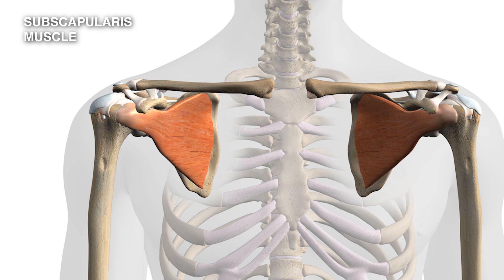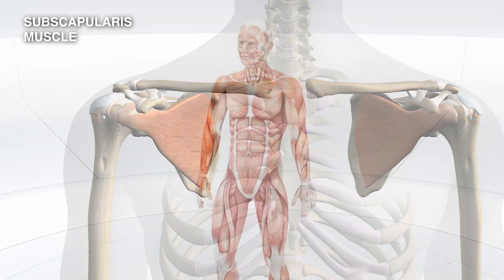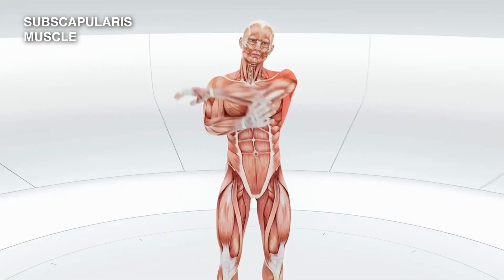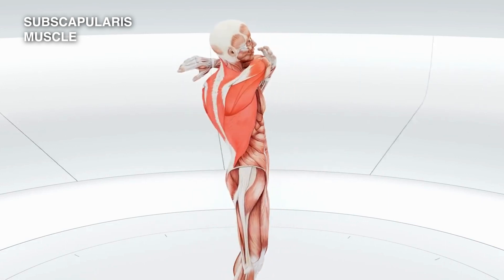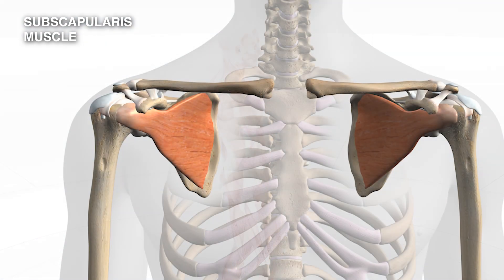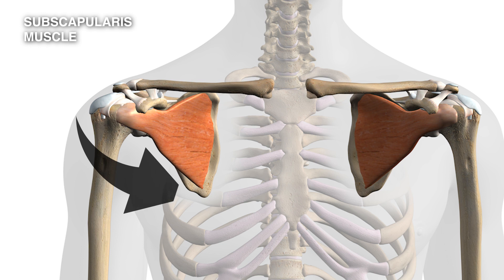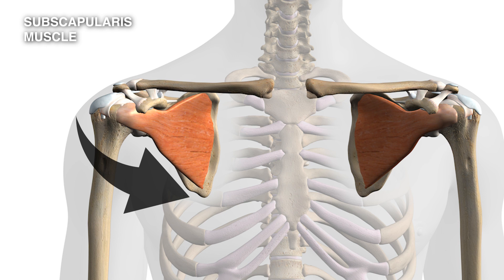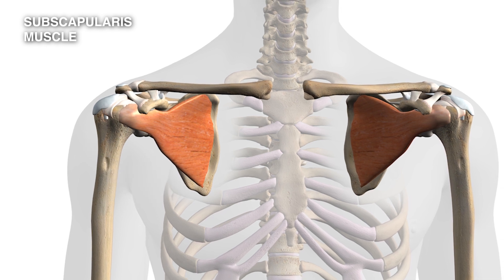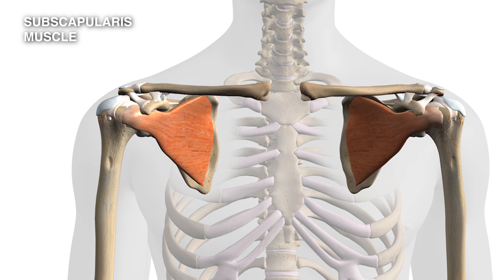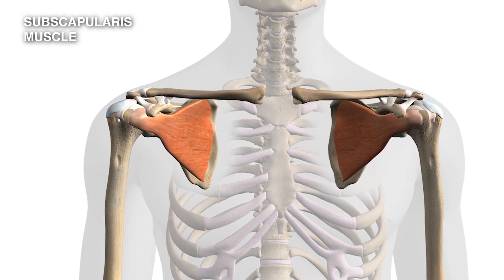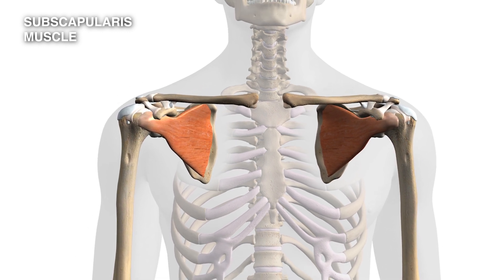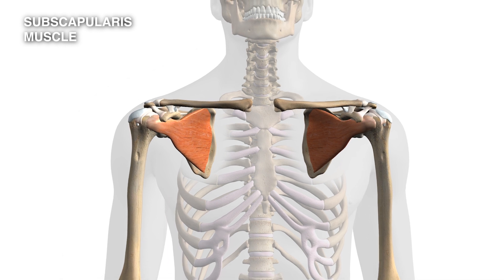The second thing it does is when it contracts it will tend to pull the outside of the humerus in towards the body, and therefore internally rotate your arm. This is a movement we do often — we hold something and pull it across our body. The subscapularis happens to be stronger than the other muscles in the rotator cuff, so this function is actually pretty important.